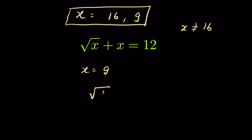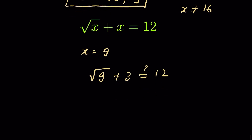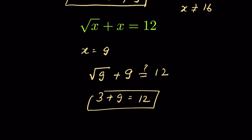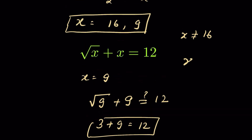When x equals 9, square root of 9 plus 9 should equal 12. Square root of 9 is 3, and 3 plus 9 equals 12. That checks out. So the only solution for x is x equals 9.